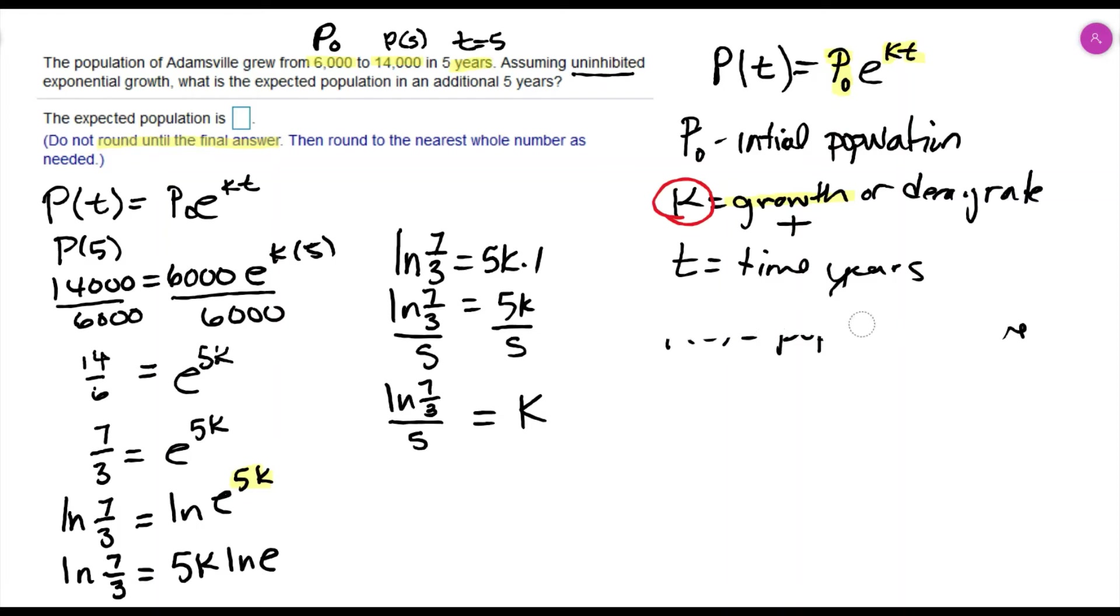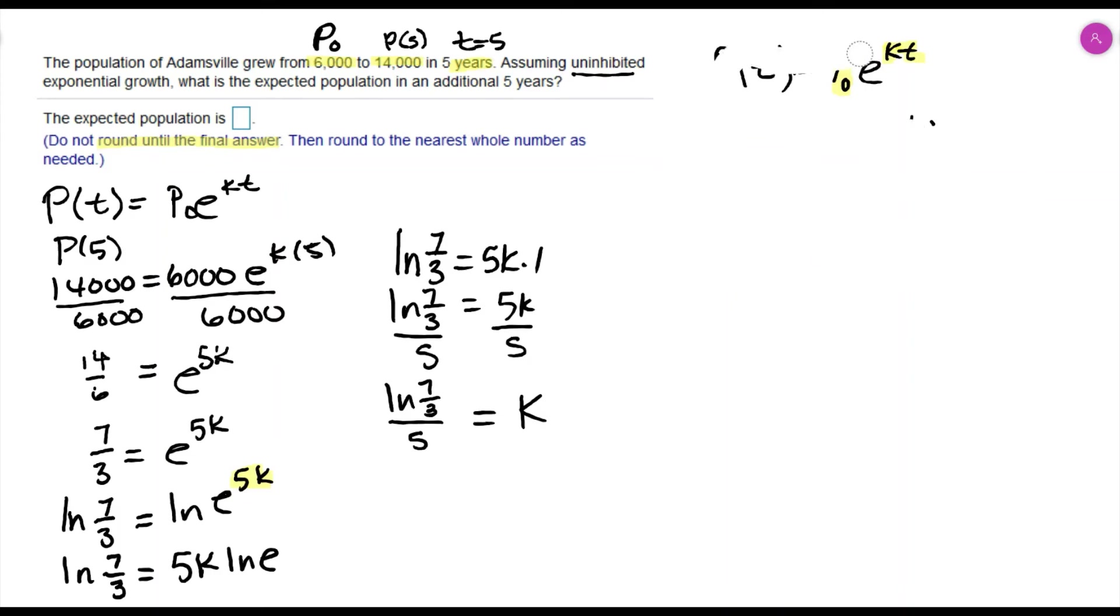Now let's read the question again to make sure that we answer what's being asked. In this question, it wants us to find what is the expected population in an additional five years.